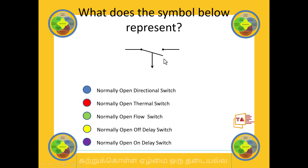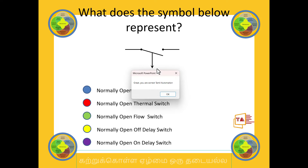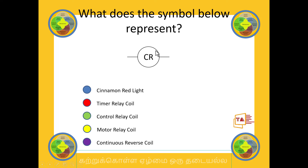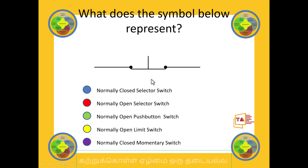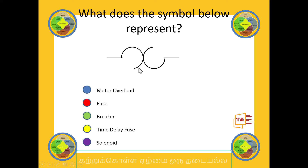What does this mean? If we look at this symbol, what does this mean? This is a normally open off-delay switch. This is correct. The answer is CR — CR is the control relay coil. If you look at this, this is a normally closed momentary switch.